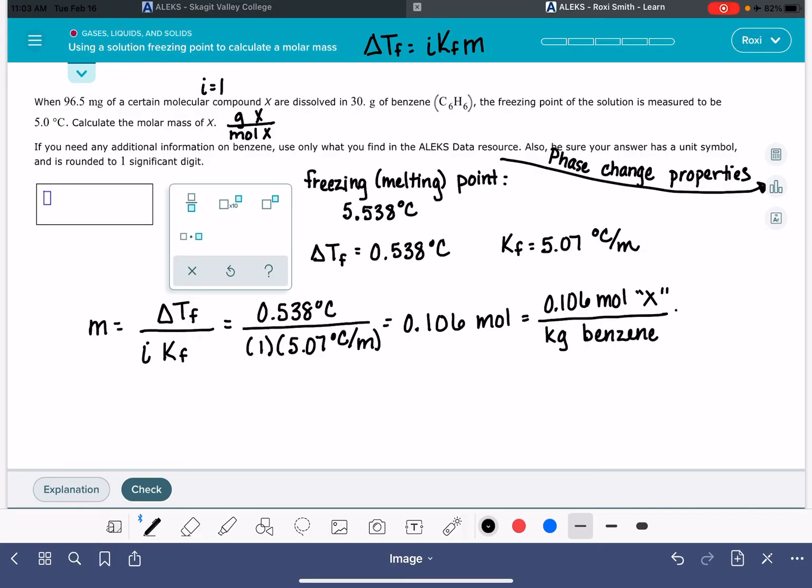If we multiply this by the mass of benzene in kilograms, we're going to be left with moles of X, which is what we need for calculating the molar mass. So let's multiply by the kilograms of benzene, 0.030 kilograms. That gives us 0.00318 moles of our compound X.